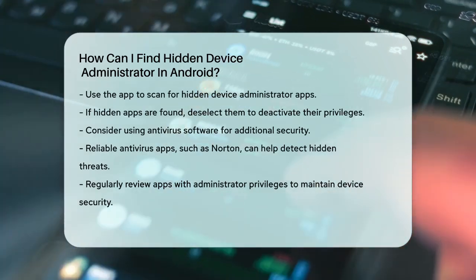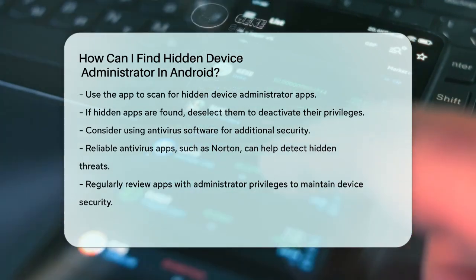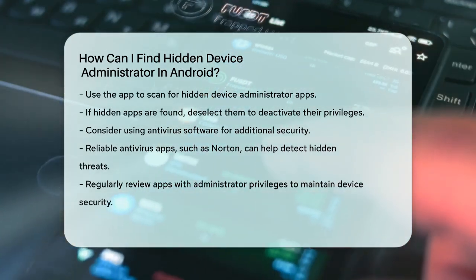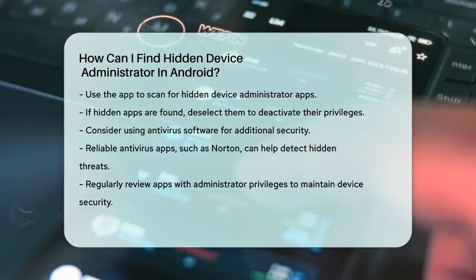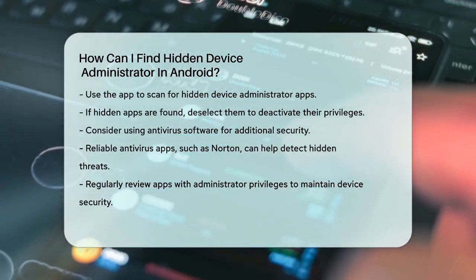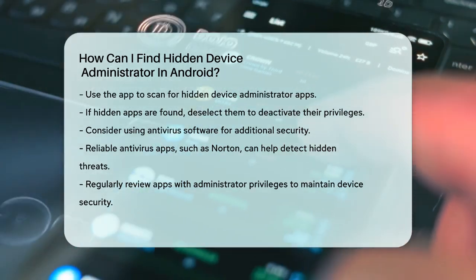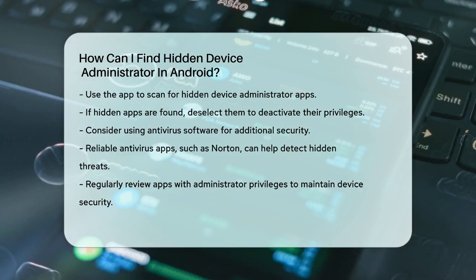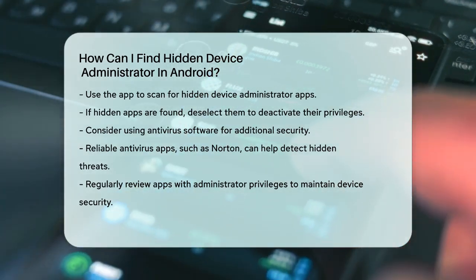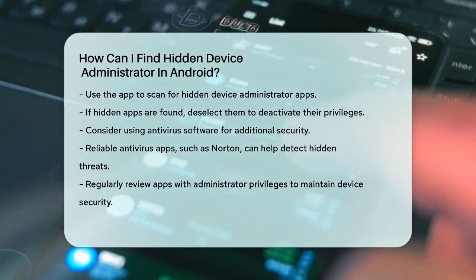Another method is to use antivirus software. Some malicious apps can hide so well that even the Hidden Device Admin Detector might miss them. In such cases, using a reliable antivirus app like Norton can help detect and remove these hidden threats. Remember, always review the list of apps with administrator privileges regularly to ensure your device remains safe and secure. By following these steps, you can protect your Android device from potential harm caused by hidden device administrator apps.